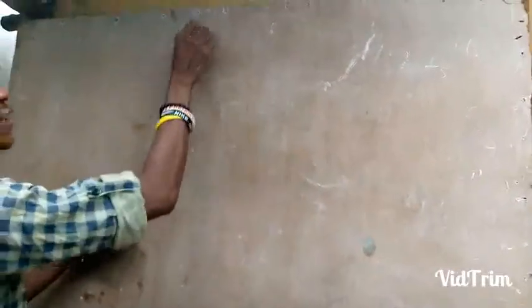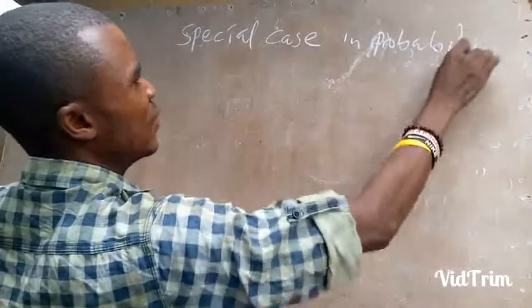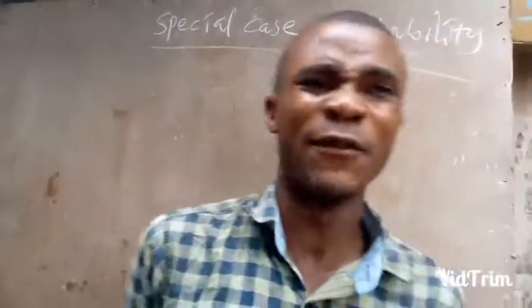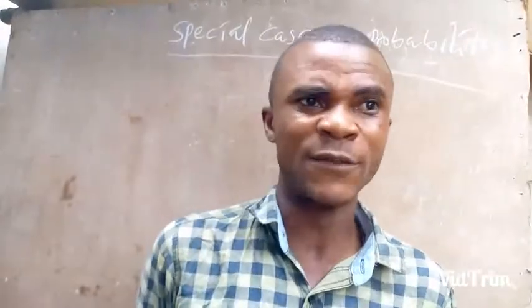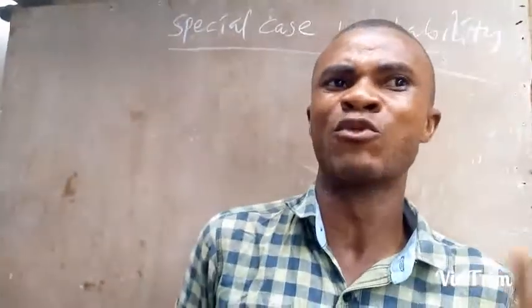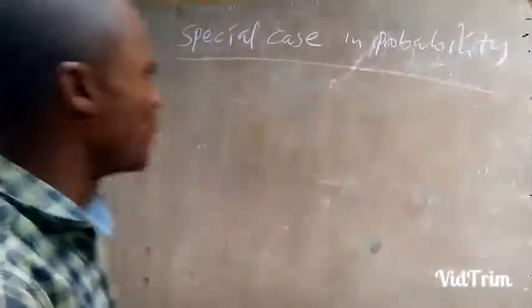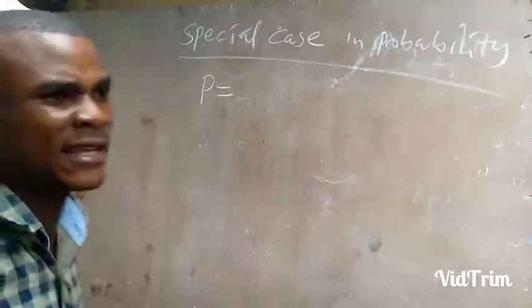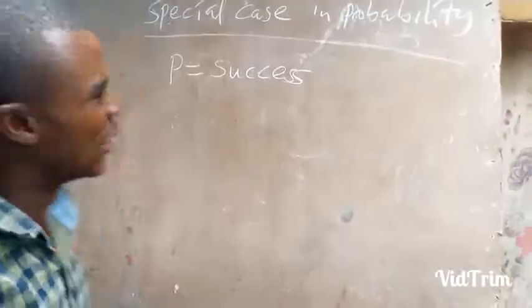This takes us to special cases in probability. In the definition of probability, we said it is the tendency for an event to occur or not to occur. For any activity you want to embark on, there are two things: either you succeed in that event or you fail. So in special cases, we represent P as success — whatever the person is engaging in, the person will succeed. P equals success.